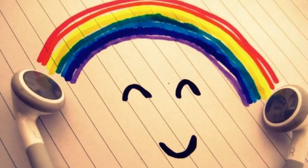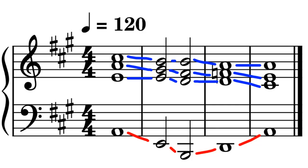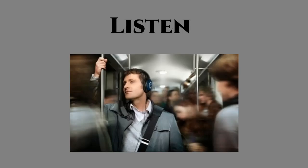When writing music, it is important to be able to manipulate the emotions of your listeners. This can be done through many means, but harmony is the most direct way. As an example, listen to this chord progression and make a mental note of how it makes you feel.